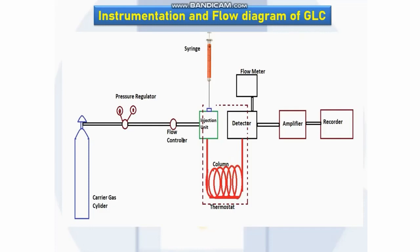The desired temperature can be maintained using a thermostat. Each component comes out from the column and is immediately detected by the detector. The detector is connected to a flow meter which measures the flow of components, and then to an amplifier. The amplifier is connected to a recorder. The detector produces electric signals proportional to the concentration of components, which are amplified and recorded as peaks on the chromatograph.